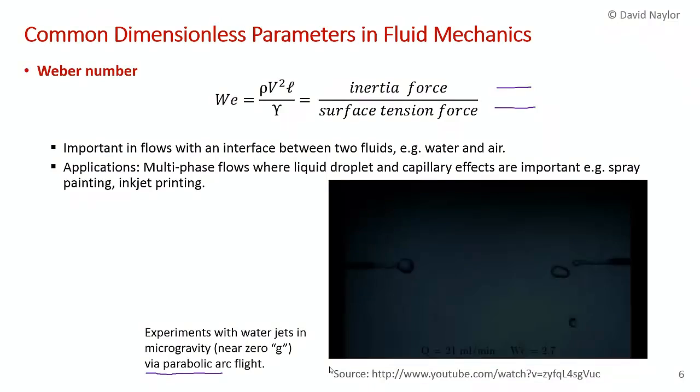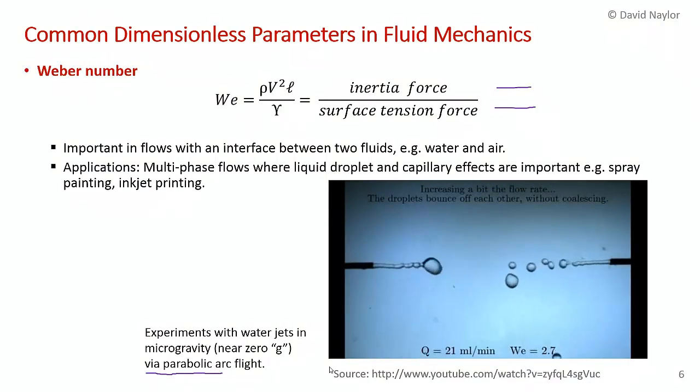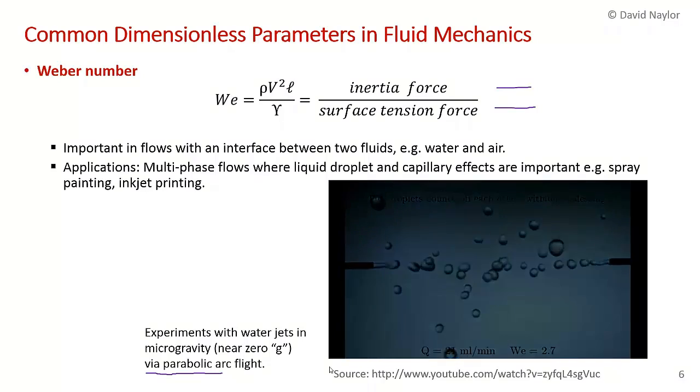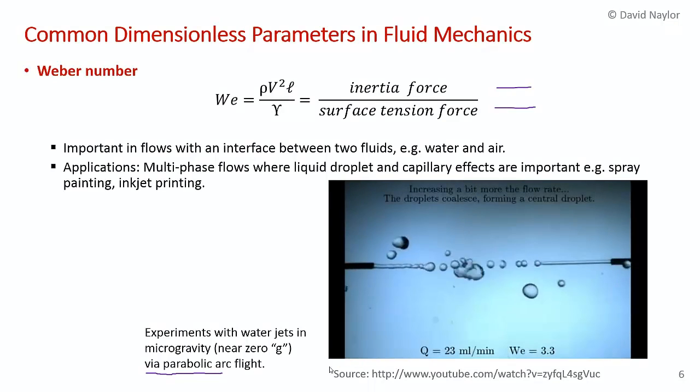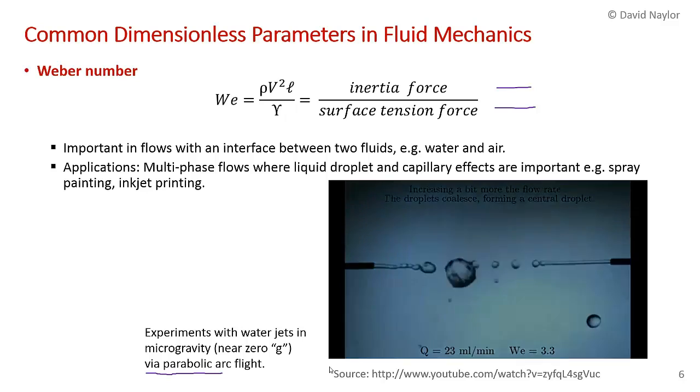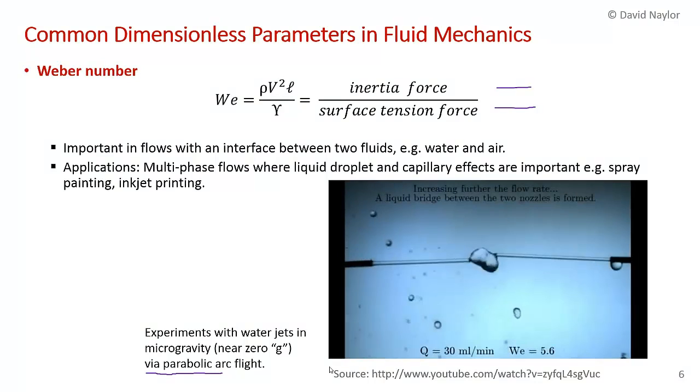This is in zero gravity and this is a quite low Weber number, 2.0. At this Weber number, the surface tension force dominates, so the droplets can't detach from their nozzles. At just a slightly higher Weber number, 2.7, the droplets detach and form little droplets which then bounce into each other, but they don't have enough momentum to coalesce.